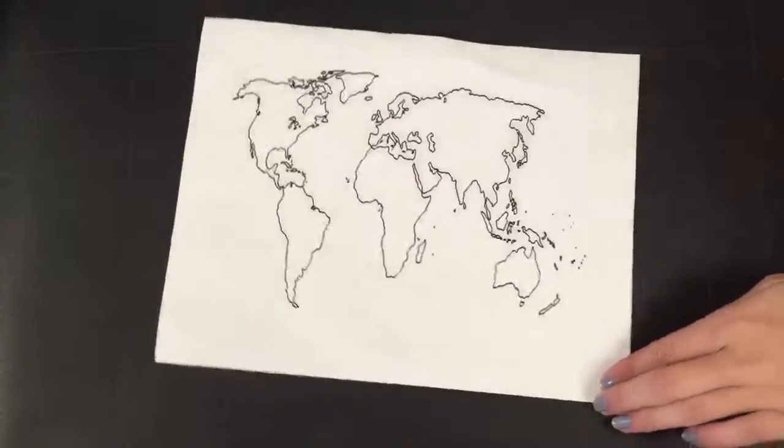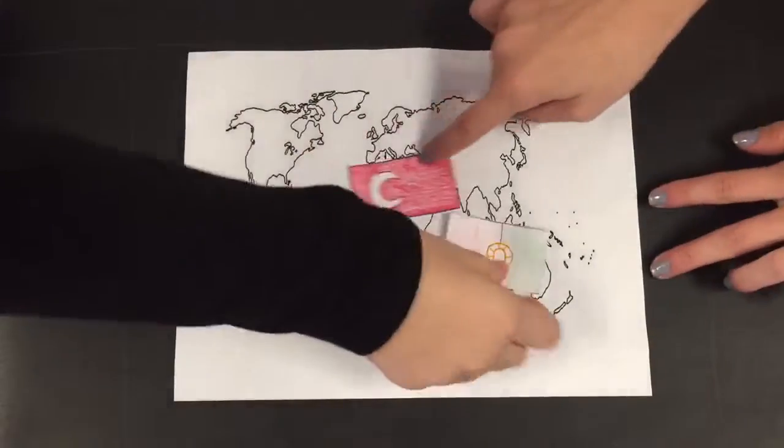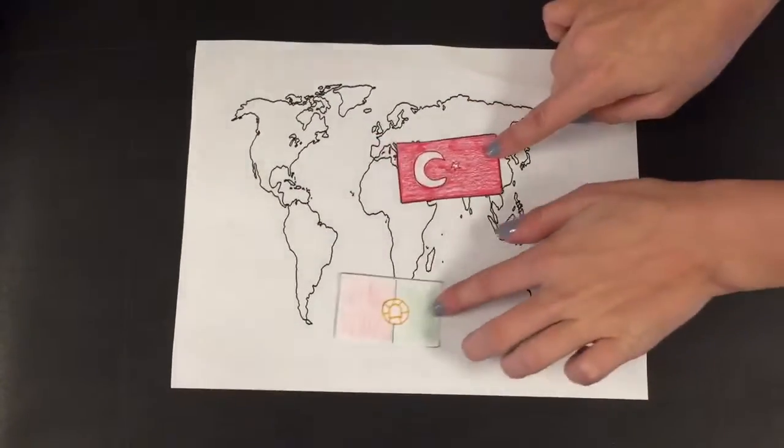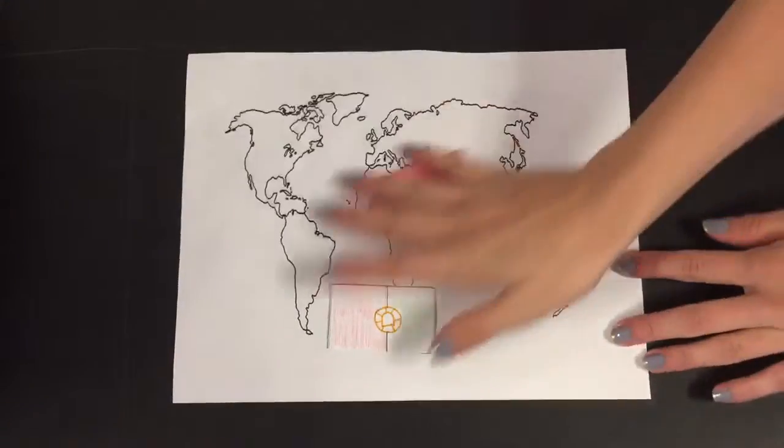Turkey controlled the land route to Asia, and Portugal controlled the seas around Africa. If others found a new route to Asia, they would become rich.